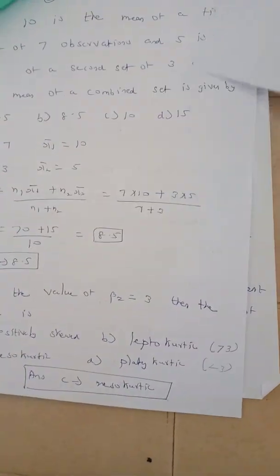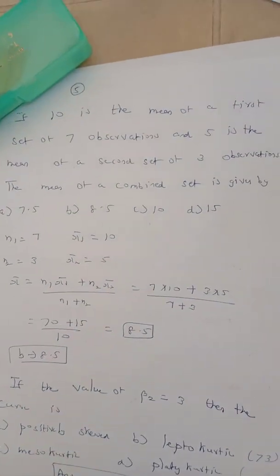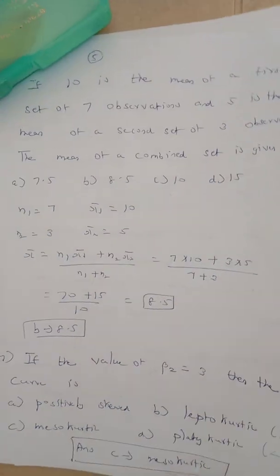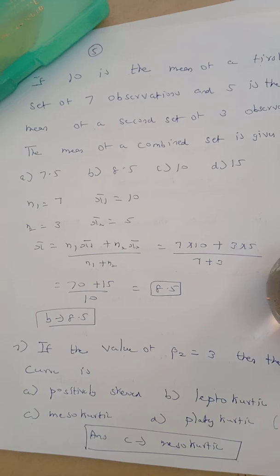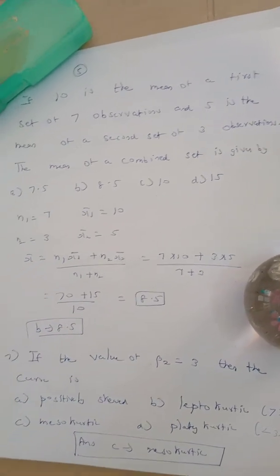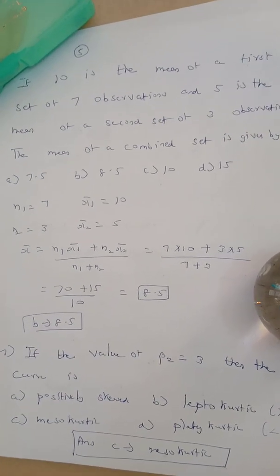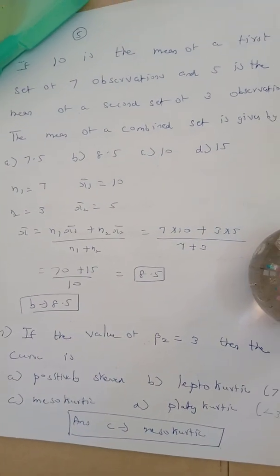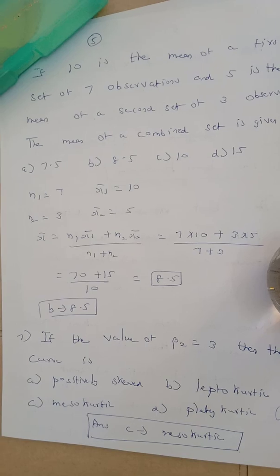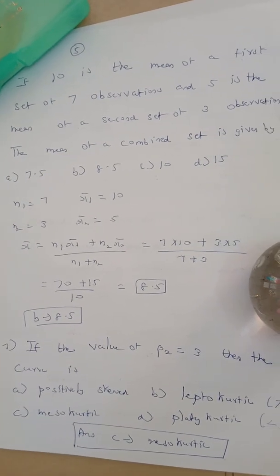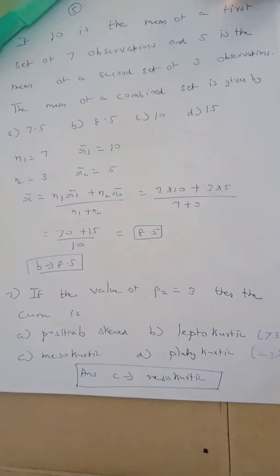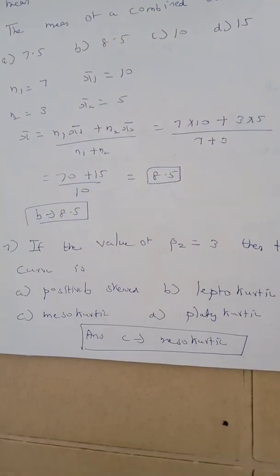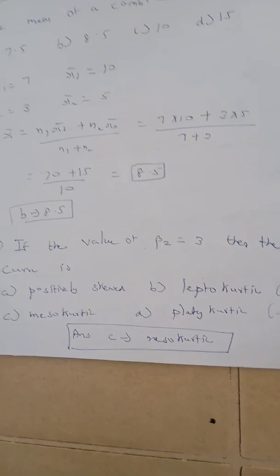Question number 7. If 10 is the mean of a first set of 7 observations and 5 is the mean of a set of 3 observations, then the mean of the combined set is. So n1 is equal to 7, x1 bar is equal to 10; x2 bar is equal to 5 and n2 is equal to 3. The combined mean formula is x bar equal to n1 x1 bar plus n2 x2 bar divided by n1 plus n2. Substituting, combined mean is equal to 8.5. The correct answer is option B.